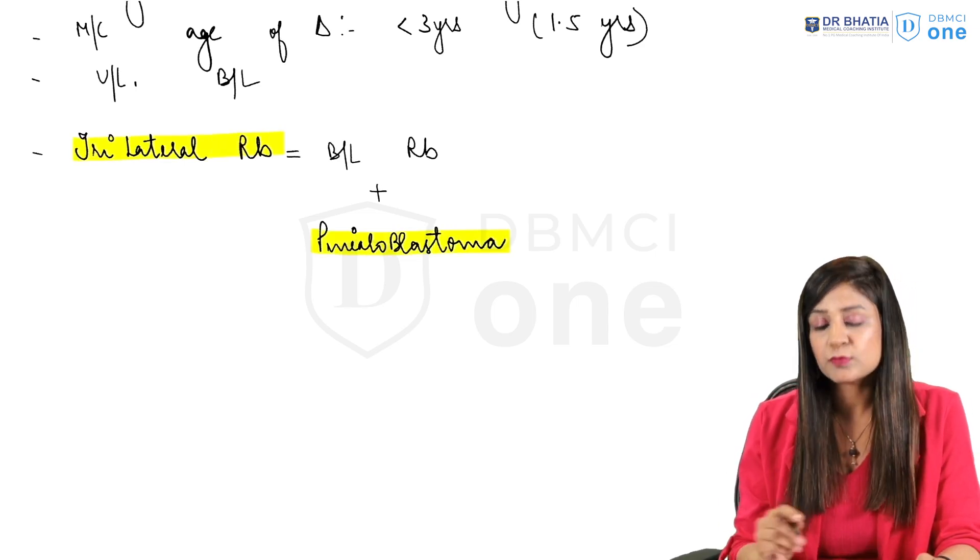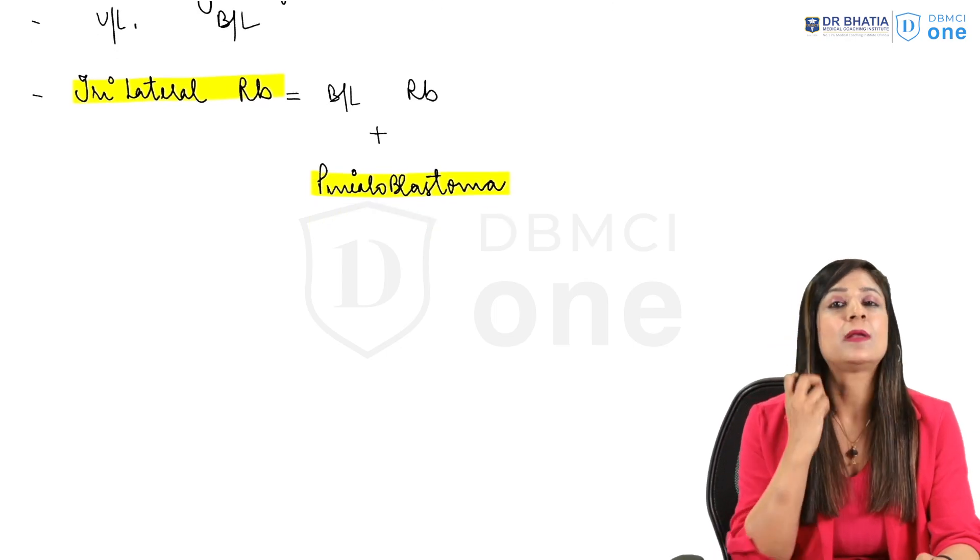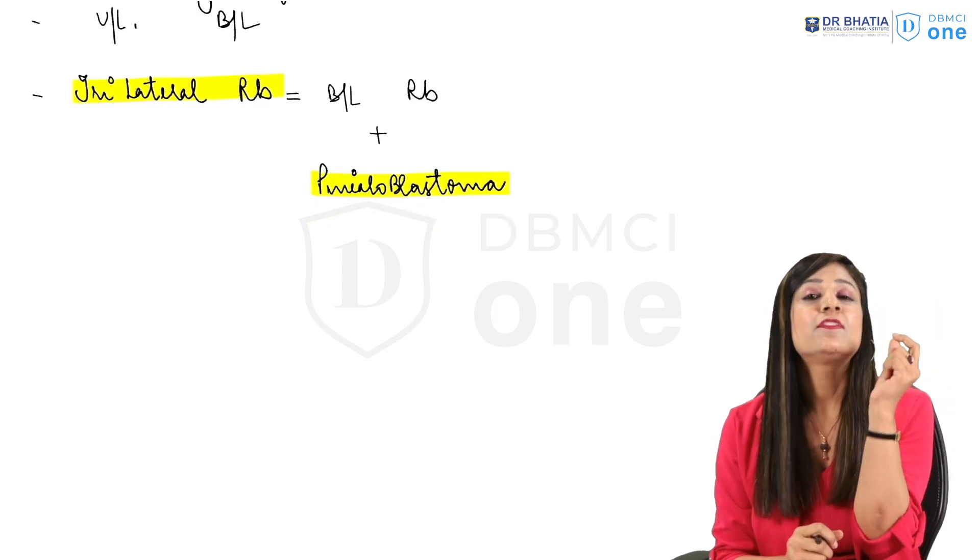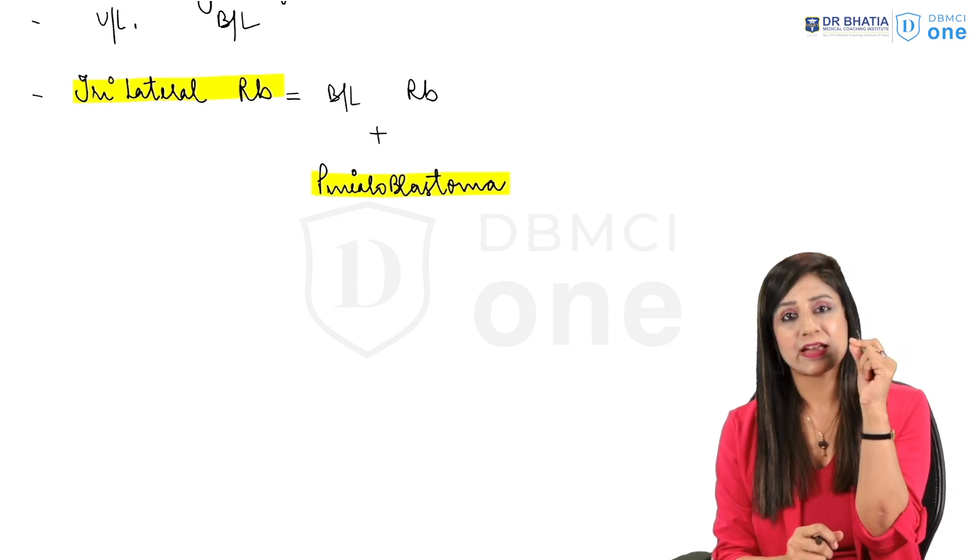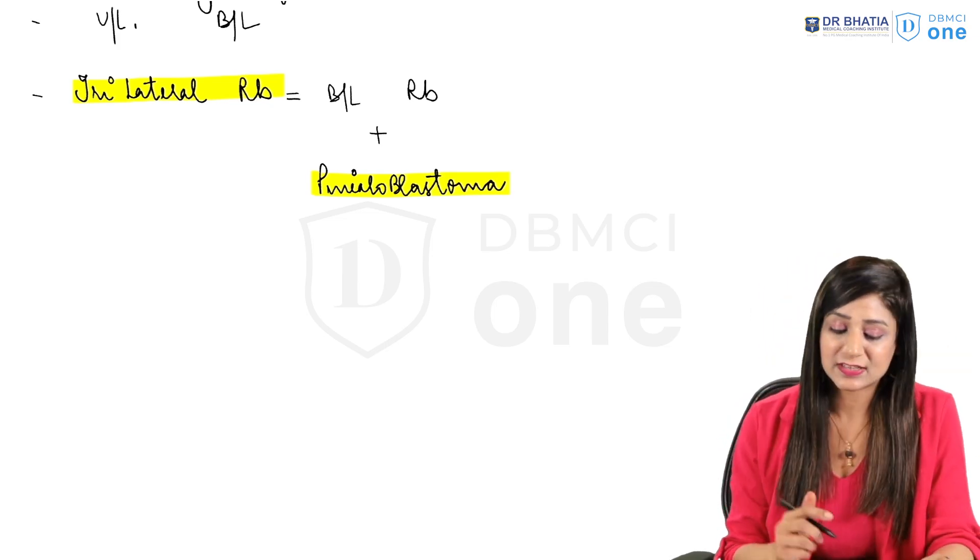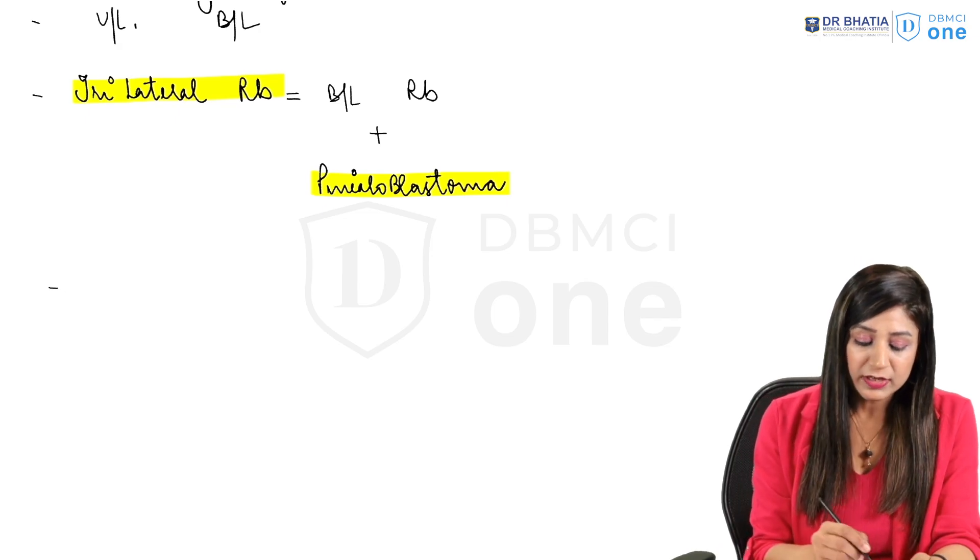Trilateral retinoblastoma also includes pinealoblastoma because the pineal gland lies behind the glabula which is considered to be the third eye. So bilateral along with this is called as trilateral retinoblastoma.